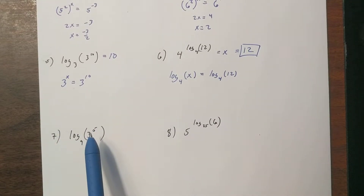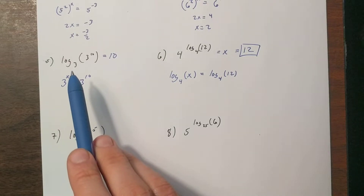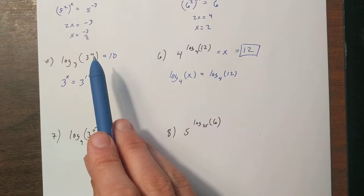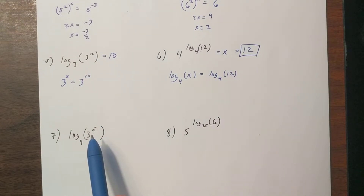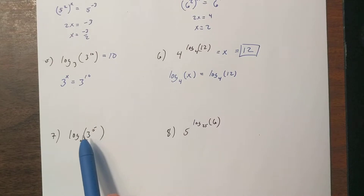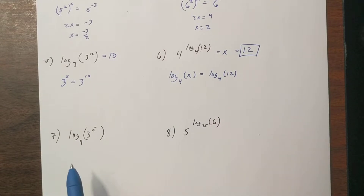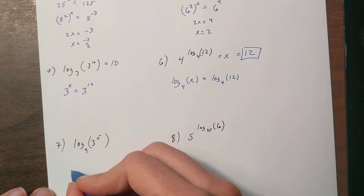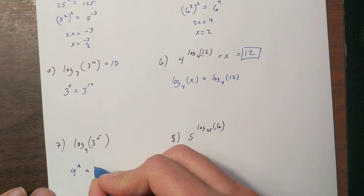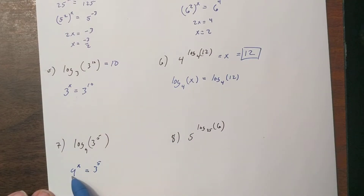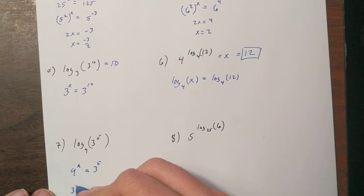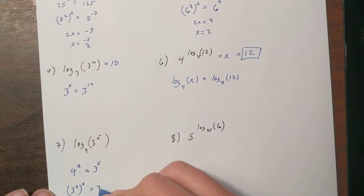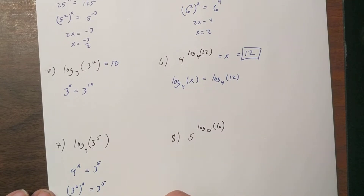This one doesn't immediately cancel out because we have log base 9 but the inside has a base of 3 — they don't match perfectly. But 3 and 9 have an exponential connection. Rewriting as an exponential: 9 to what power is 3 to the 5th? Since 9 is 3 squared, we get 2x equals 5, so x equals five-halves.